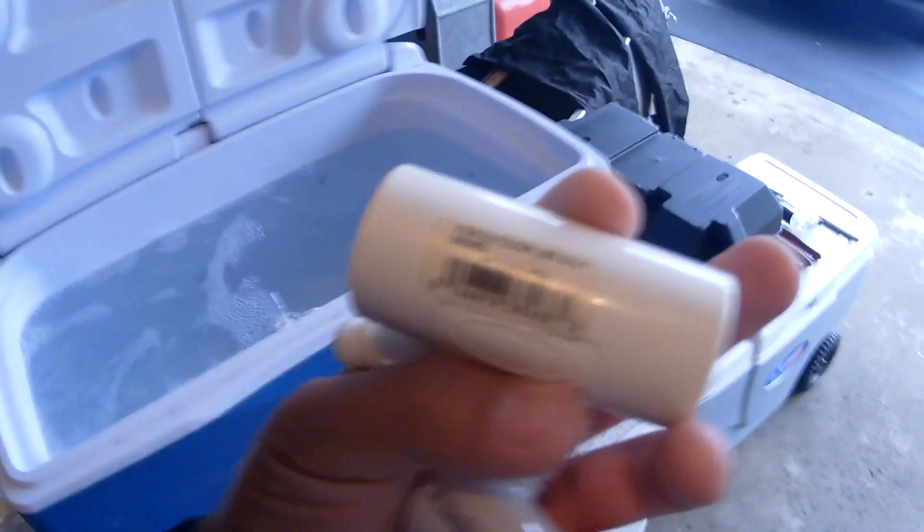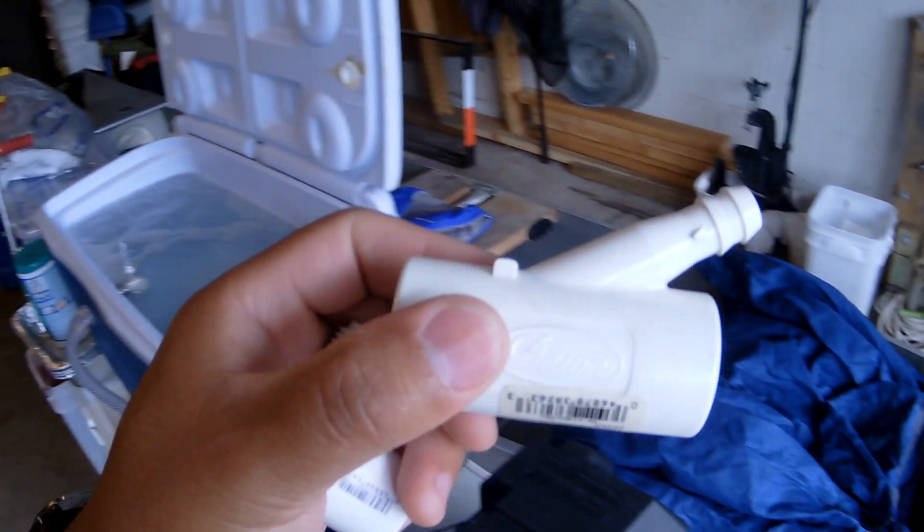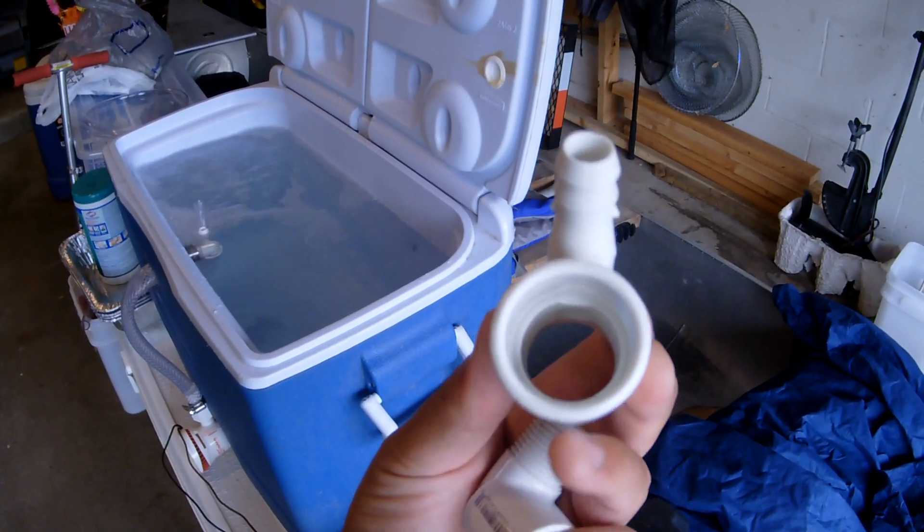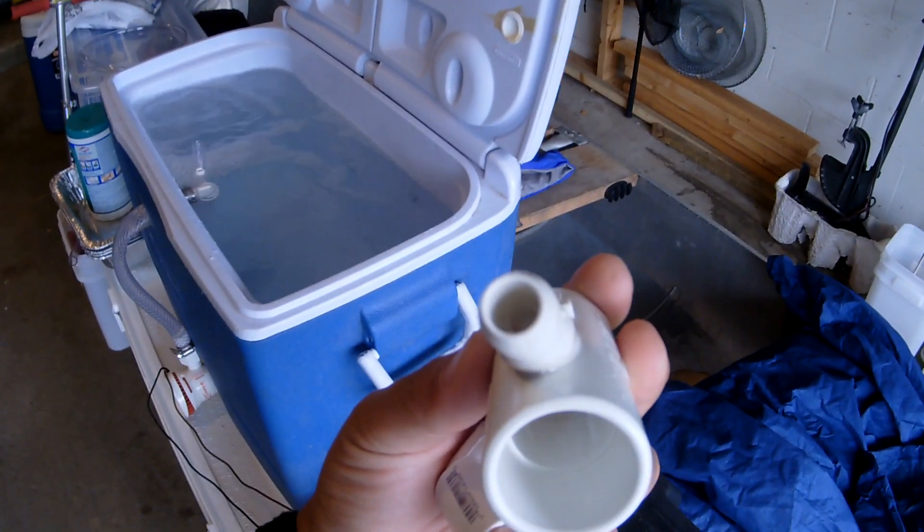Now I'll show you the pieces that I use. This thing was found at Lowe's for about 10 cents a piece. As the water goes here and exits on the far end, it creates a vacuum here for the air to come in with it, creating these bubbles.